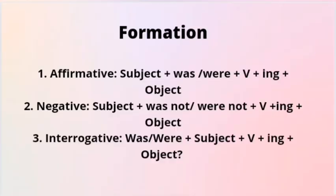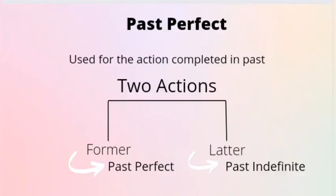For the formation of past continuous: if your sentence is affirmative, it begins with subject, was or were, plus verb -ing, and object. 'Was' is used with singular and 'were' with plural. If negative: subject, was not or were not, verb plus -ing, and object. If interrogative: was or were, subject, verb plus -ing, and object.